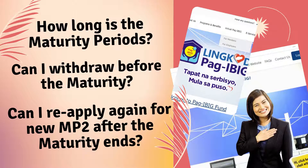How long is the maturity period? Can I withdraw before the maturity? Can I reapply again for a new MP2 after the maturity ends?